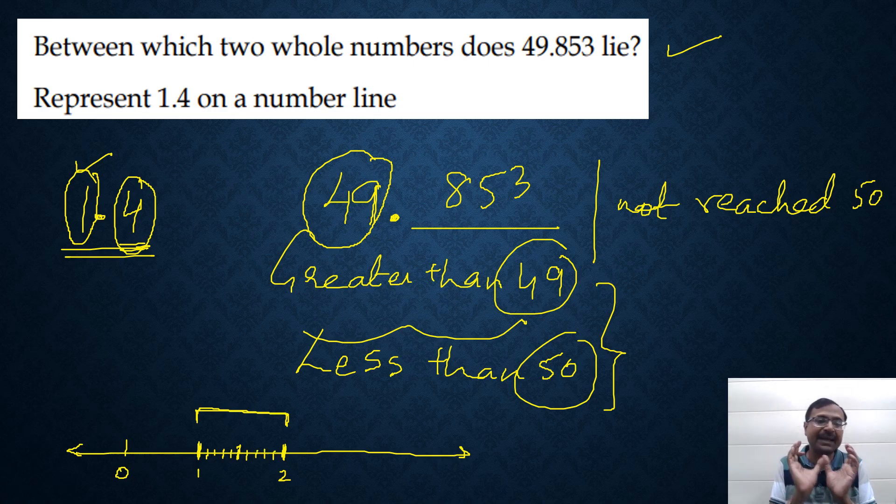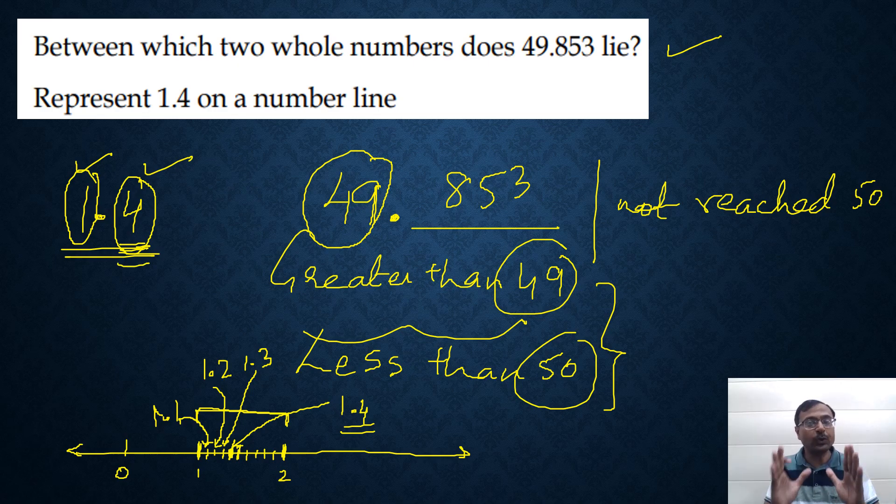I have separated out that gap between 1 and 2 into 10 parts. Each part will represent 0.1 because that will become 1 tenth. 10 parts, one part is 1 tenth and therefore, the first part here, this is 1.1. The second part here is 1.2. The third part is 1.3 and therefore, the fourth part, that is the one which I am darkening right now, this part is 1.4. That is how you represent numbers on a number line. Since we had only one digit after decimal, I separated it out into 10 parts.